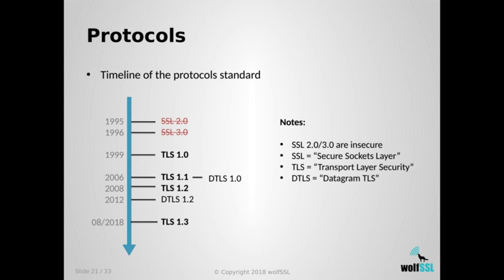In 1999, TLS 1.0 was released as the continuation of the SSL standard — just a name change from Secure Socket Layer to Transport Layer Security. Then came TLS 1.1 and DTLS, which is datagram-based TLS over UDP. TLS 1.2, which has been the existing standard and most adopted, has been out since 2008. There are several reasons why TLS 1.2 is no longer the top technology, including vulnerabilities found in its design and the rise of new features needed.